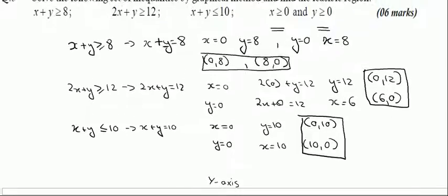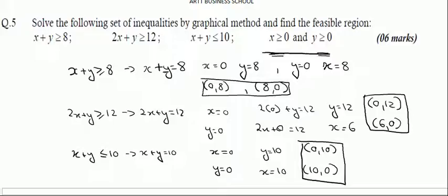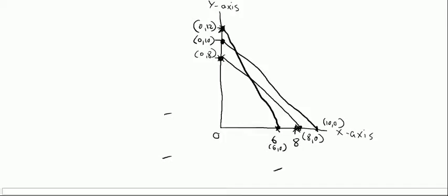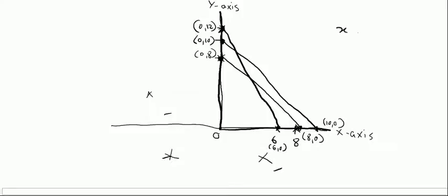Now I have to consider the conditions. The non-negativity conditions state that x is greater than or equal to 0 and y is greater than or equal to 0 — both values cannot be negative. This ensures we do not shade any quadrant where x or y is negative. The shaded region must lie in the positive quadrant where both x and y are positive.